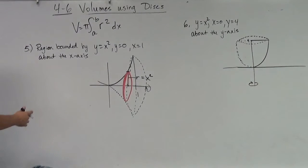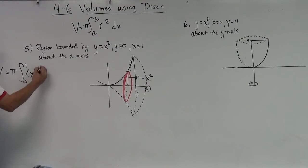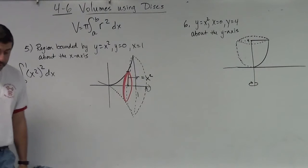So let's go ahead and do our integral. The integral from zero to one of pi r-squared, r in this case is x-squared, squared, dx. That's all there is to it.